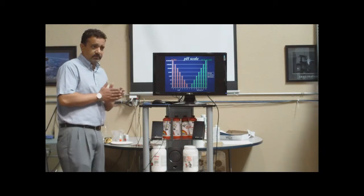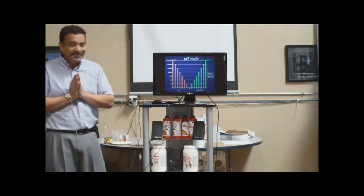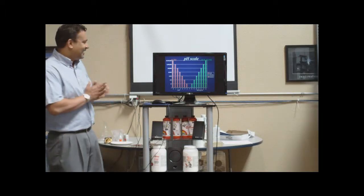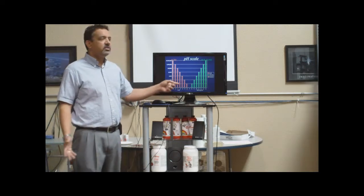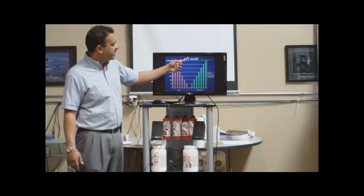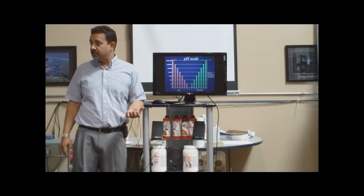Anyway, this is the pH scale. This is what you guys have been waiting for. Let's understand that 7 is neutral. The word pH means potential of hydrogen.